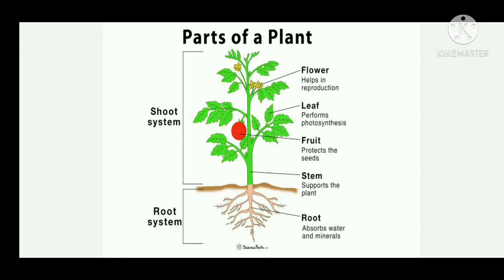So this is how we now know the broad parts of a plant. We will first learn about the root system, that is the roots of a plant and its various types.